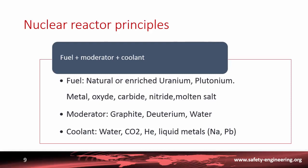The fuel is either uranium — especially the U-235 isotope, which is the only one to be fissile — or plutonium-239. Uranium could be used either in its natural form or enriched in the isotope 235. This fuel could take the form of metal, oxide, carbide, nitride, or even molten salt. The different moderators used have been graphite, deuterium, or water — the simplest one. As a coolant, we can use water, CO2, helium, or liquid metals such as sodium or lead.